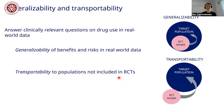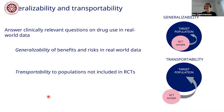When we want to answer clinically relevant questions on drug use in real-world data, we want to generalize data from the RCT sample to our target population, because we know there are differences between people sampled into a randomized control trial and the rest of the population. We're also interested in transporting evidence to populations that were not included in randomized control trials for many different reasons.